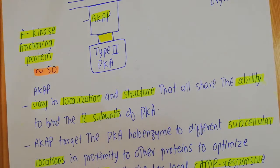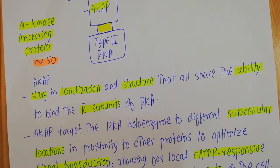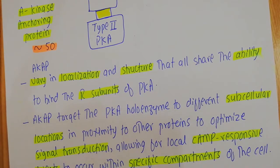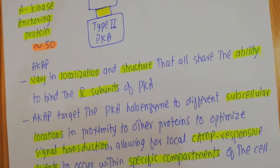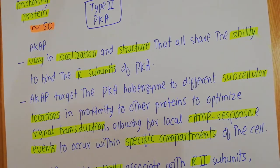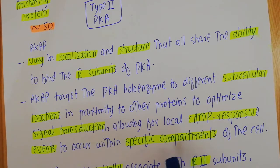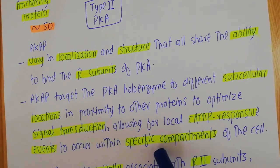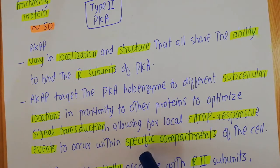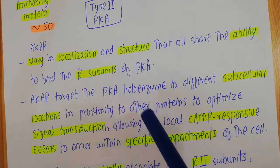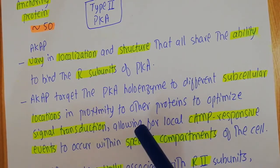Because AKAPs vary in their localization and structure, they target the protein kinase A holoenzyme to different subcellular locations in proximity to other proteins. This optimizes signal transduction, allowing local cyclic AMP-responsive events to occur within specific compartments of the cell. For example, if activity of protein kinase A is needed in the endoplasmic reticulum, the AKAPs will localize protein kinase A there so it can interact with proteins needed for a specific ER function.